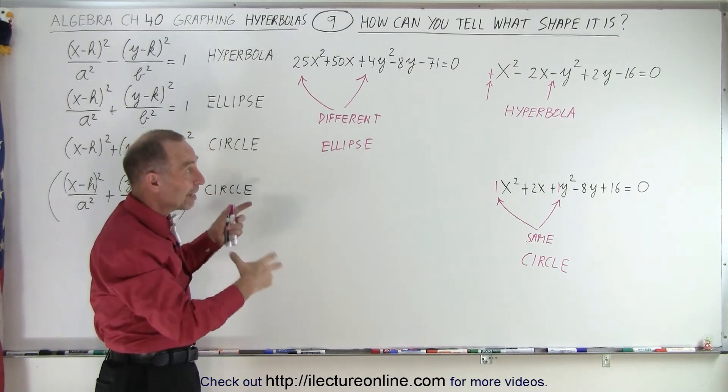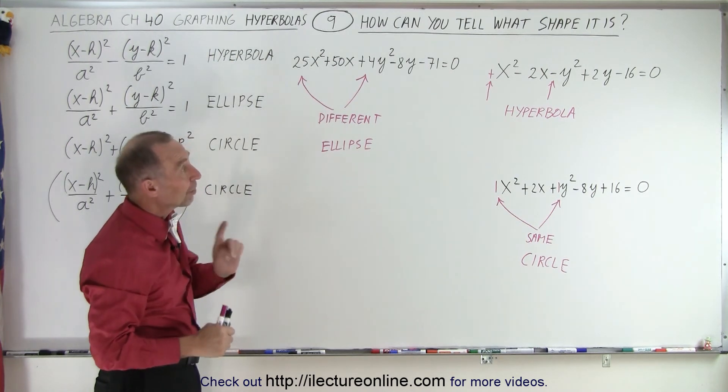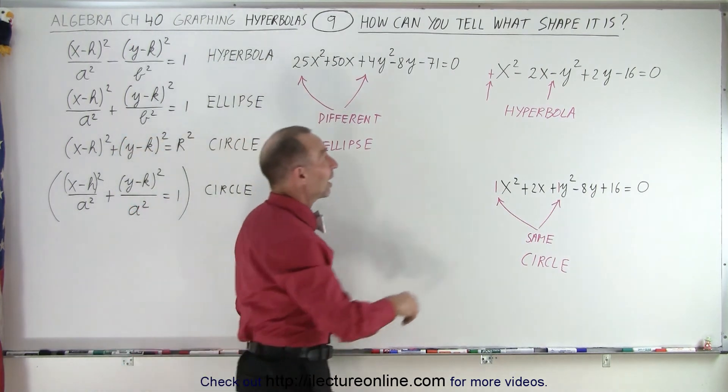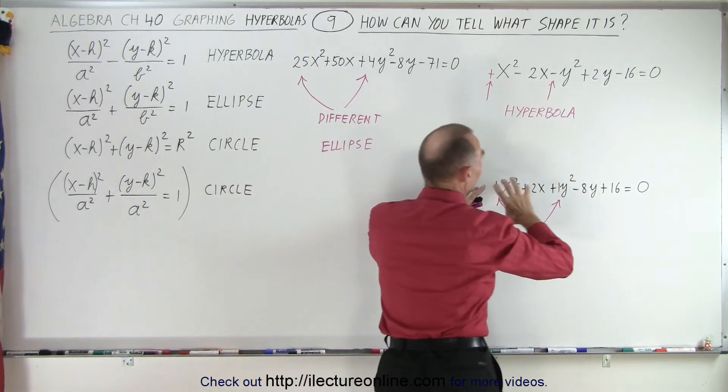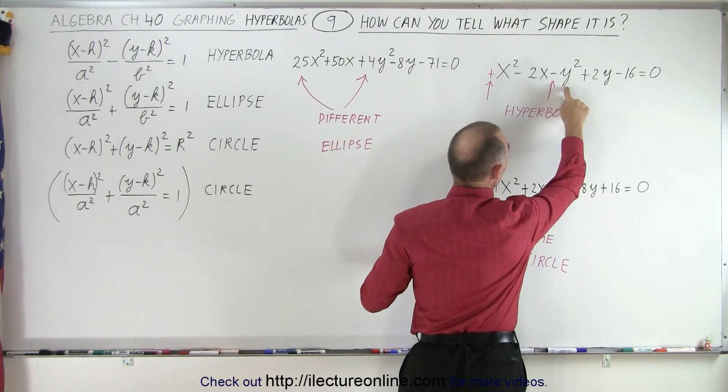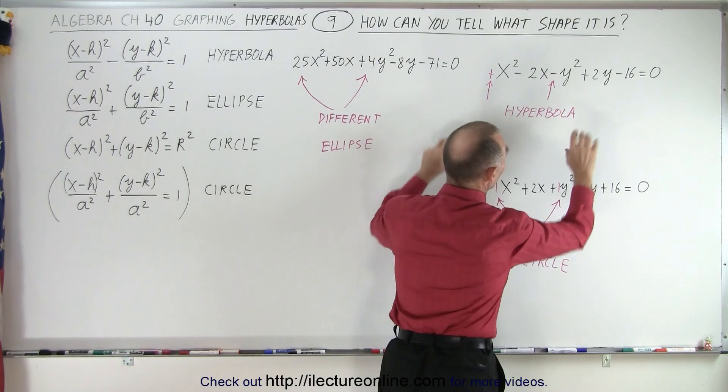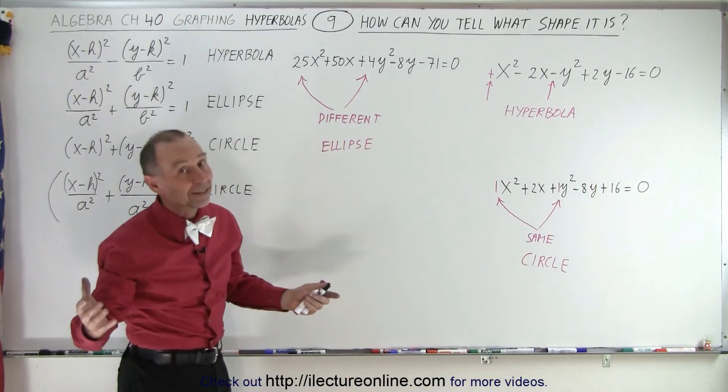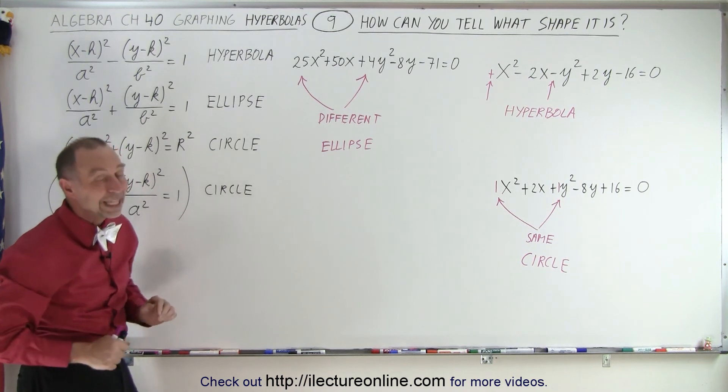And so very quickly you get a feel for what this will look like. On top of that, you can also tell that if it's a hyperbola and the y-square term is negative, that means that it opens sideways. If the y-square term is positive, it will open up and down. So in this case, it's a hyperbola that will open sideways. So very quickly, we can tell a lot about these equations by just looking at those key points.